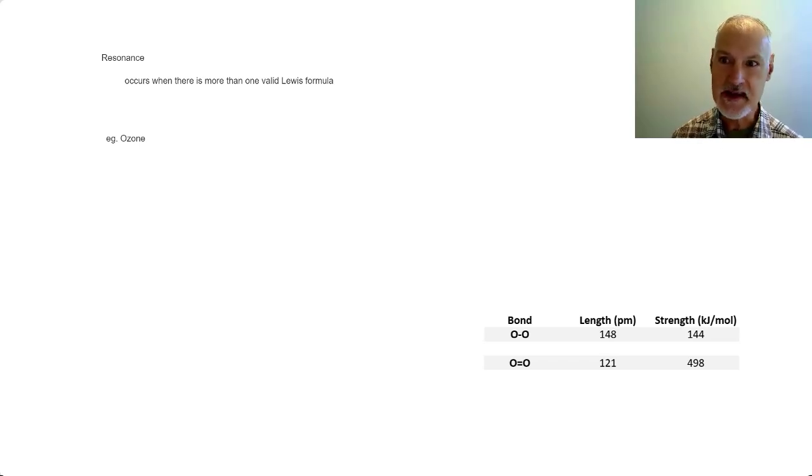In this program, we're going to take a look at a concept called resonance and how it applies to covalent bonding. Resonance is defined as when there are more than one valid Lewis formula for a substance.